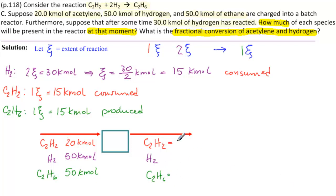C2H2 is 20 minus, because it's being consumed, 1ξ. C2H2 is 50 minus 2ξ, and it had better be 30, and this is being produced, so we have 50 plus 1ξ.